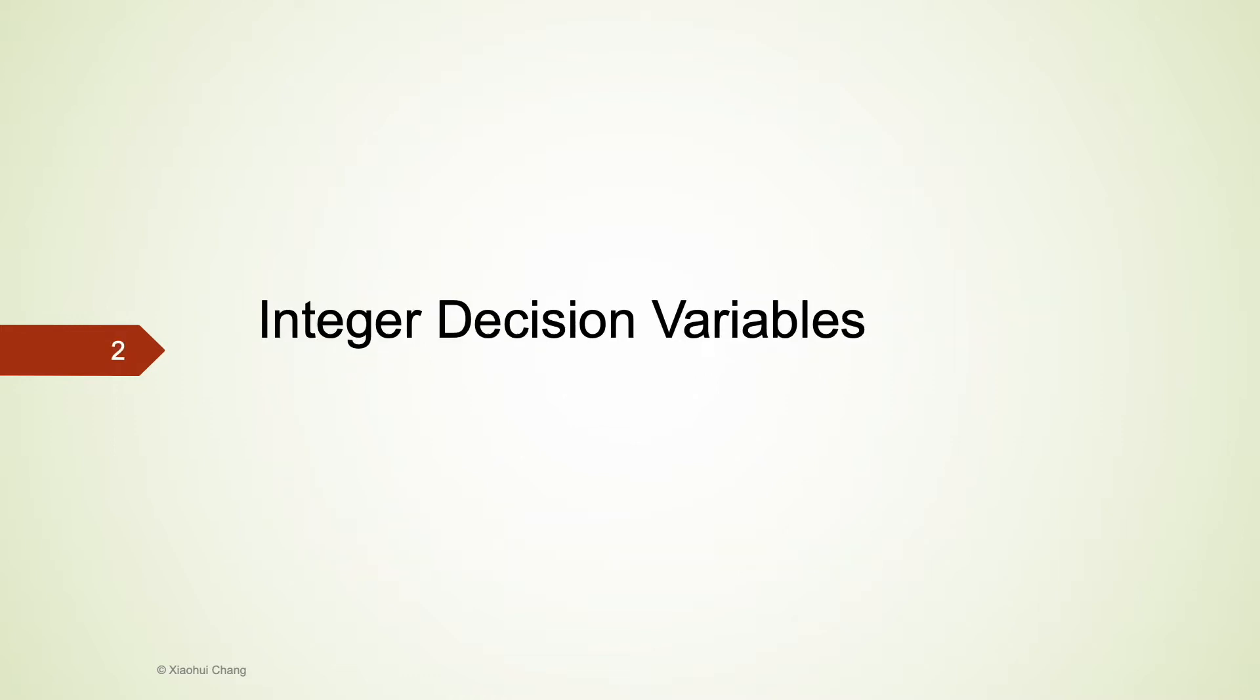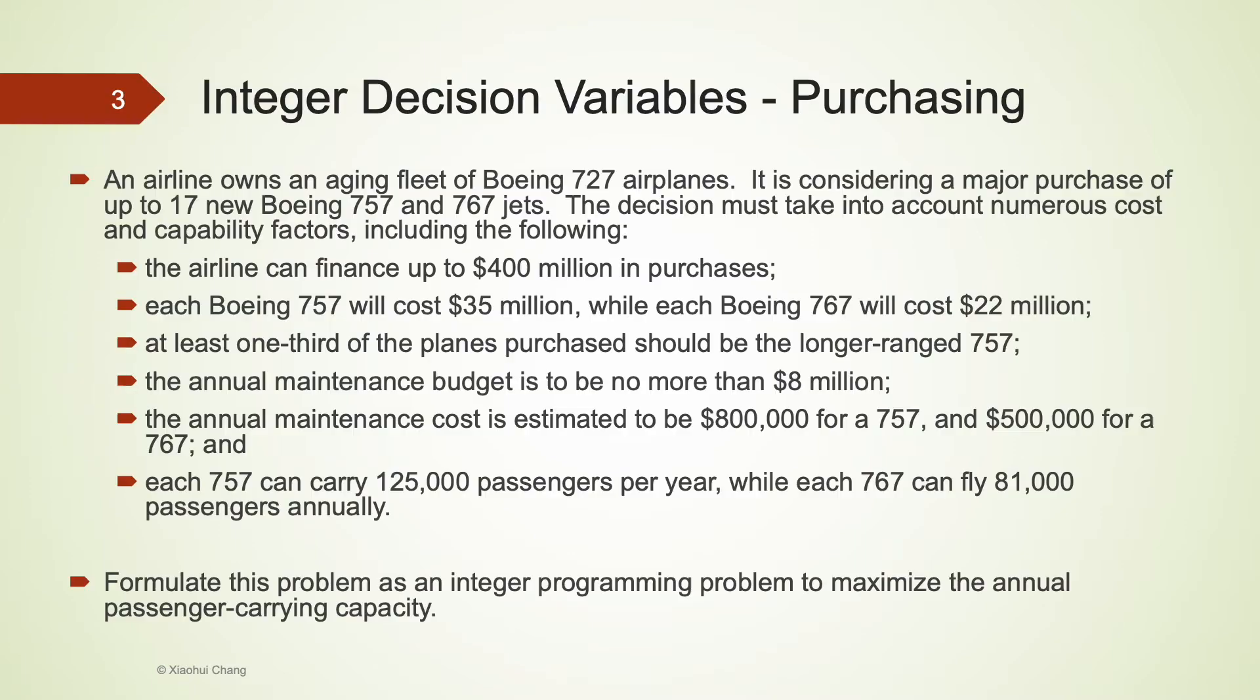Let's start with integer decision variables. In this example, the airline company is considering a major purchase of up to 17 new Boeing 757 and 767 jets. The decision must take into account numerous cost and capability factors. For this type of decision problem, we must force the decision variables to take only integer values. Otherwise, the optimal solution will not make sense.